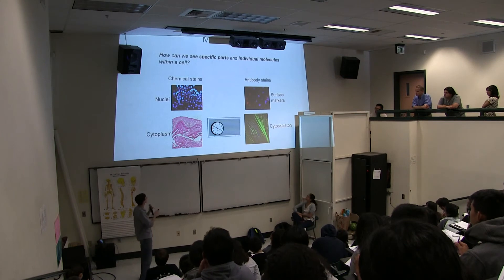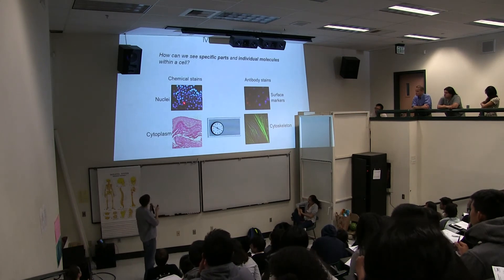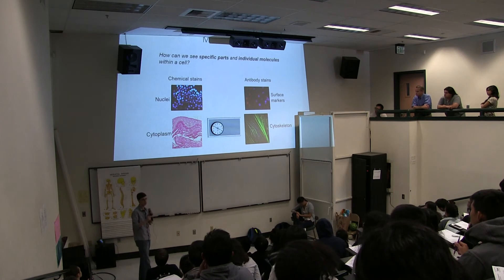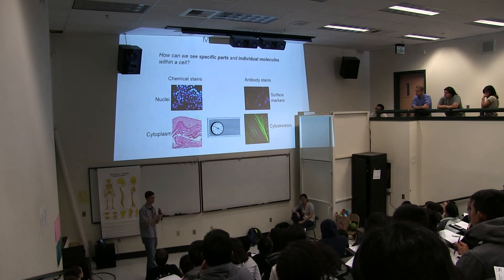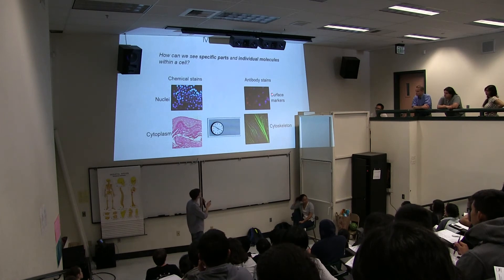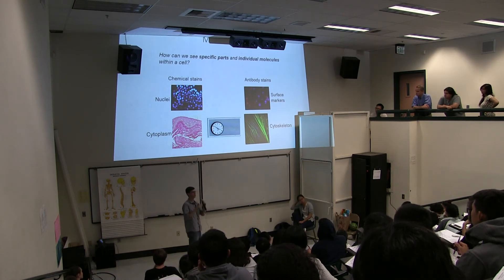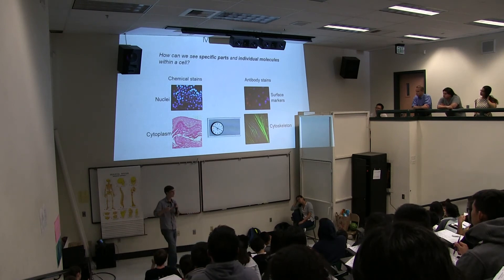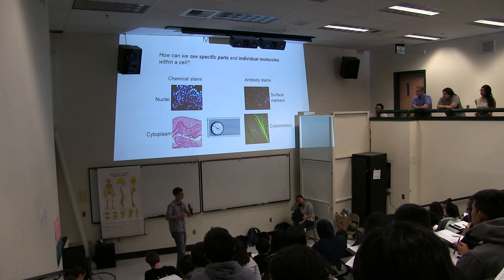These are some really cool images we're able to get using these techniques. Here are chemical stains of nuclei which allow you to count specific cells, see how many there are, and how big the nuclei are. You can see cytoplasm in tissues extracted from animals or humans to see how cells are organizing themselves. With antibodies you can look at surface markers to see if, say, blue cells are one type of blood cell and red cells are another, how they're interacting, whether they're attached to each other. You can also look at the cytoskeleton to see how the cell is organizing itself, how it's structured, and how it's moving in space.